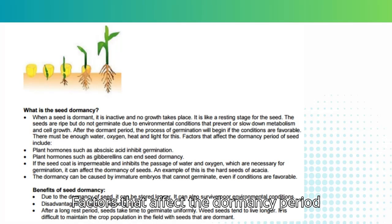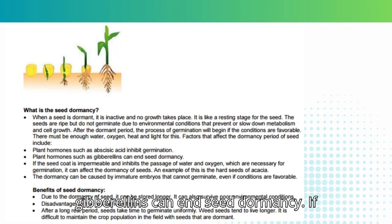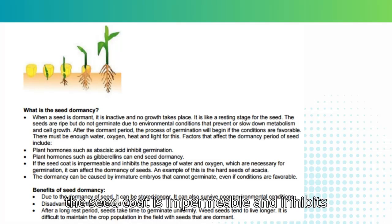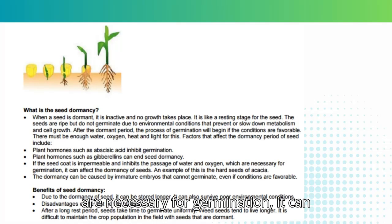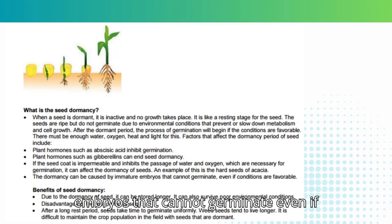Factors that affect the dormancy period of seeds include: plant hormones such as abscisic acid, which inhibit germination; plant hormones such as gibberellins, which can end seed dormancy; an impermeable seed coat that inhibits the passage of water and oxygen necessary for germination — an example is the hard seeds of acacia; and immature embryos that cannot germinate even if conditions are favorable.